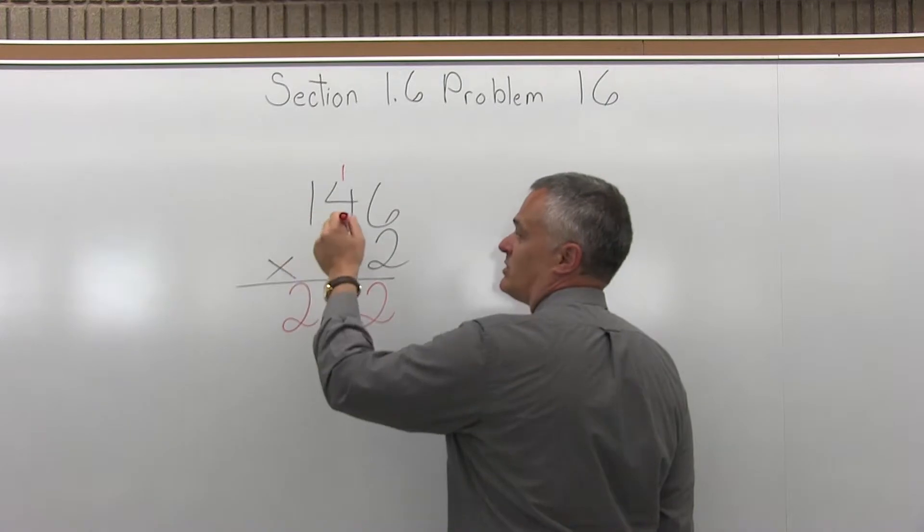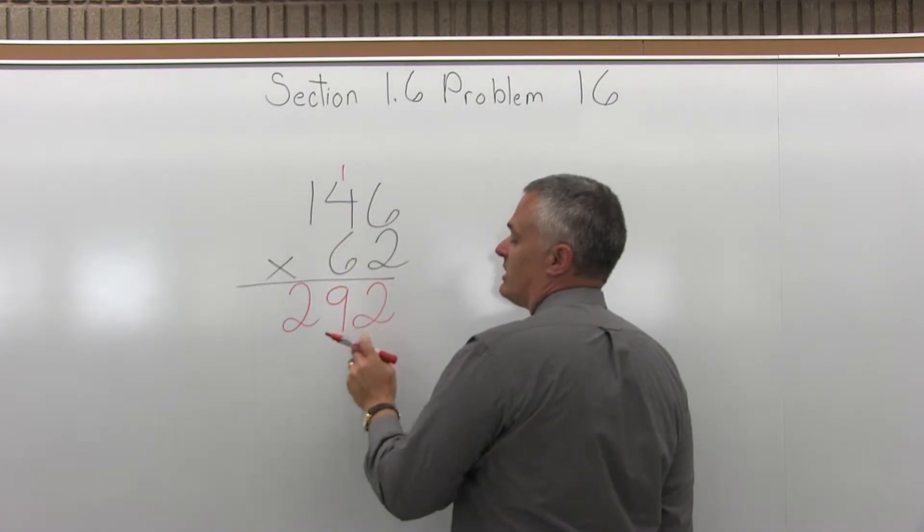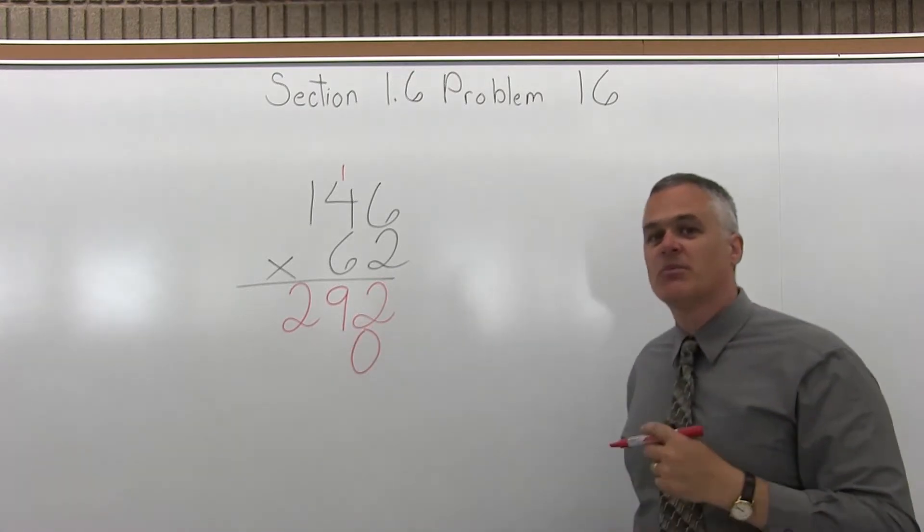Multiply the 6, 3 times the 146. The next row down, you either want to move over 1 to the left automatically, or start with just a 0 to keep everything in the right position.